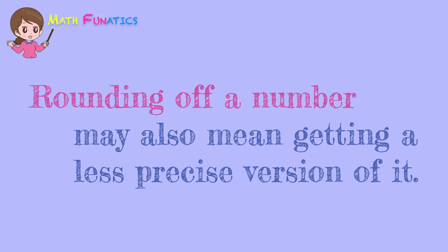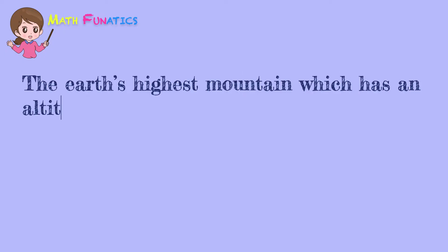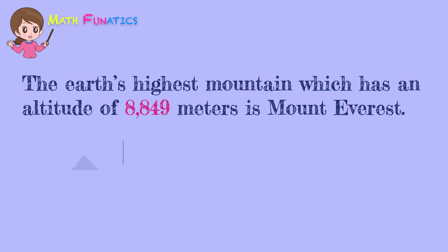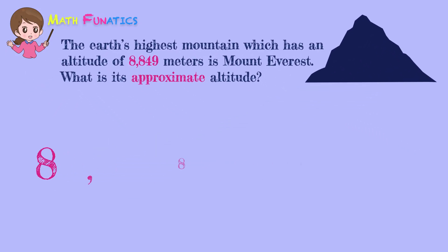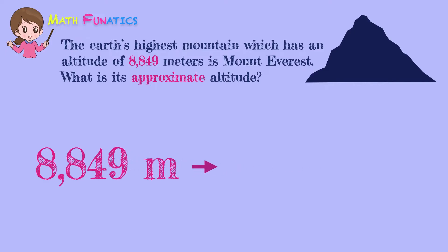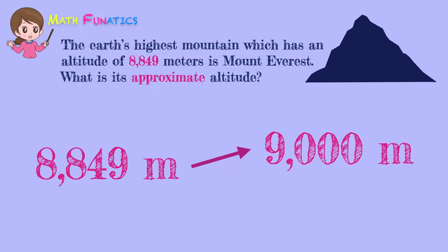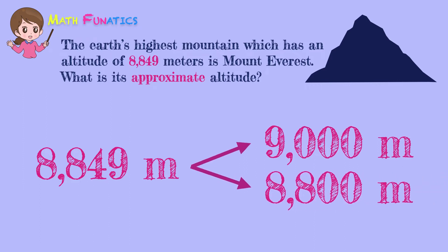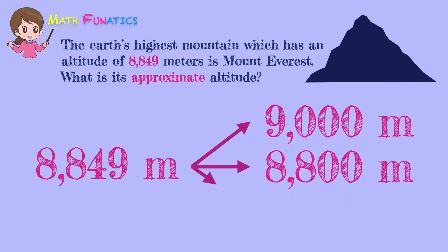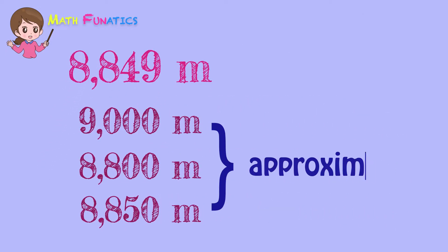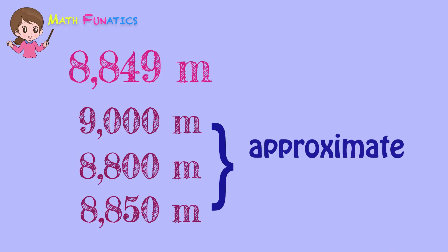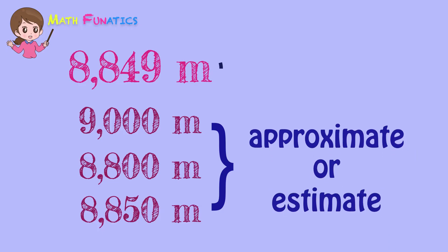For you to understand further, let's have an example. The Earth's highest mountain, which has an altitude of 8,849 meters, is Mount Everest. What is its approximate altitude? Some may say that Mount Everest has an approximate altitude of 9,000 meters. Others may give 8,800 meters or 8,850 meters.